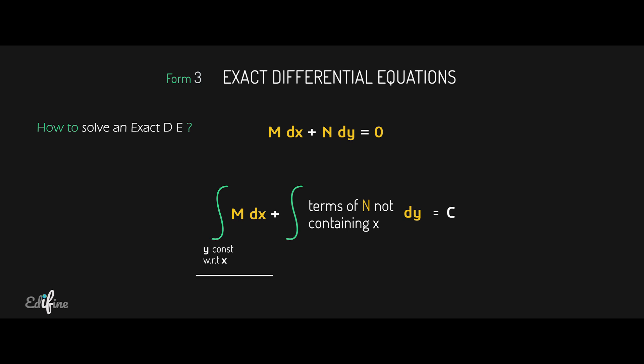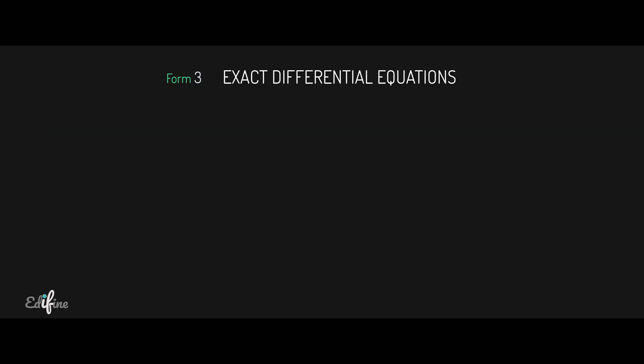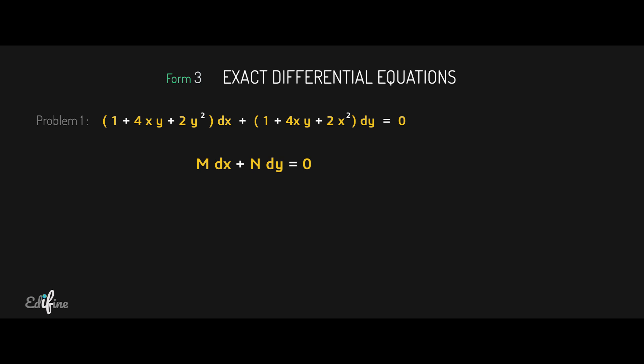In the first integral we integrate with respect to x keeping y constant. In the second integral we integrate with respect to y, but only consider the terms of N not containing x. Now consider the differential equation (1 + 4xy + 2y²) dx + (1 + 4xy + 2x²) dy = 0, which is of the form M dx + N dy = 0.